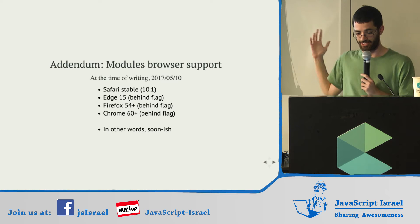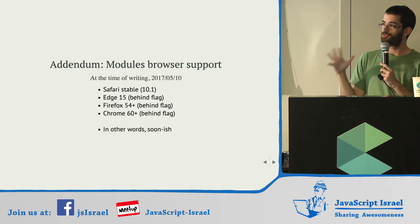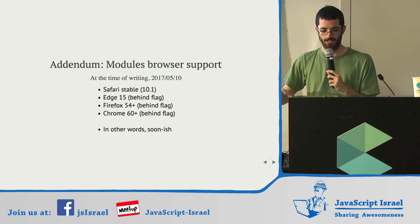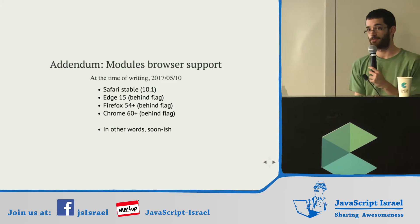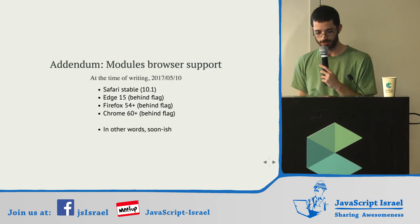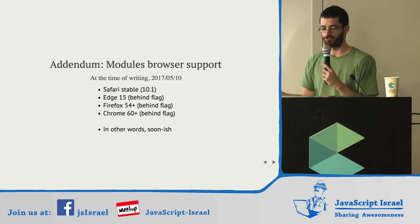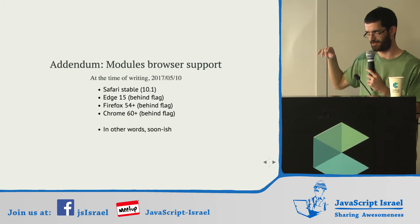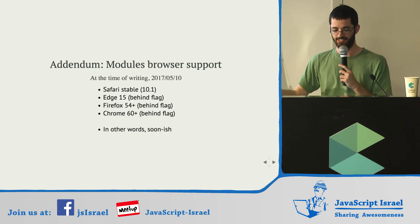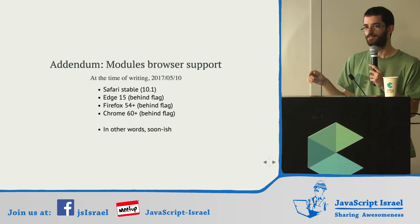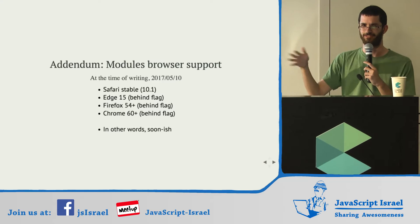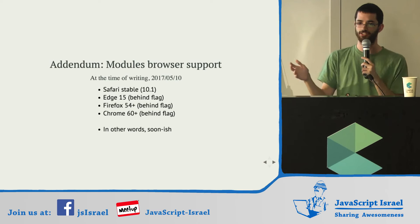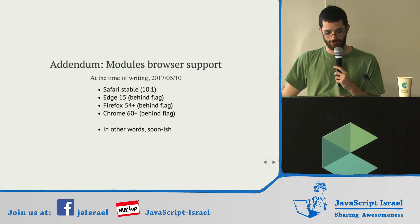On browser support: you can use ES modules with Babel and tools like Rollup. But in actual browsers, it's in Safari already, so the four people who use Safari can use it right now. It's in Edge 15, so the seven people who use Edge have to turn on a flag. It's in Firefox 54 and above, again behind a flag, and Chrome 60 which is currently Chrome Canary, also behind a flag. So in a year or so, we can all just use modules whenever and however.